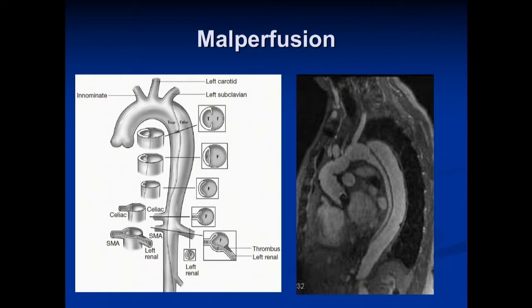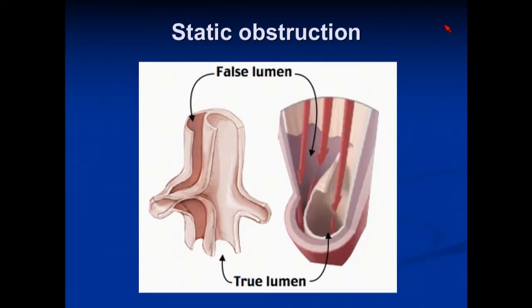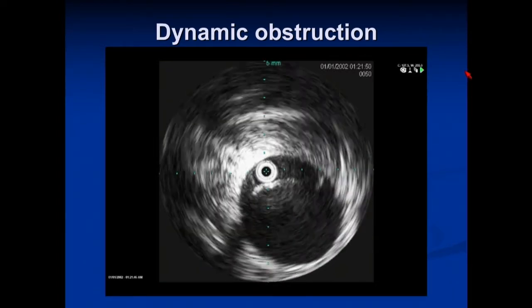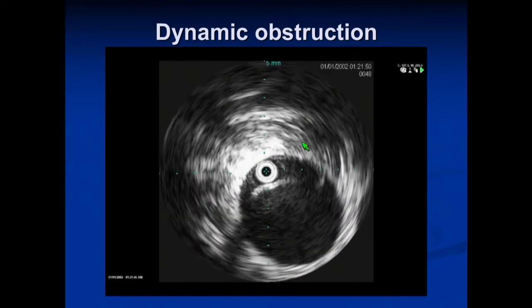Here's a typical Type B dissection. You can see the true lumen tapering to near occlusion, and the false lumen pressurized by arterial flow compressing the true lumen. As you move down the aorta, the true lumen is compressed further and further until you get to the branch vessels. With static obstruction, the false lumen can clip off the true lumen, or this area could have thrombosed such that the artery is now occluded. More common is dynamic obstruction — here is an IVUS image with the catheter placed inside the true lumen, showing the false lumen pressurizing and causing the intimal flap to nearly occlude the true lumen.